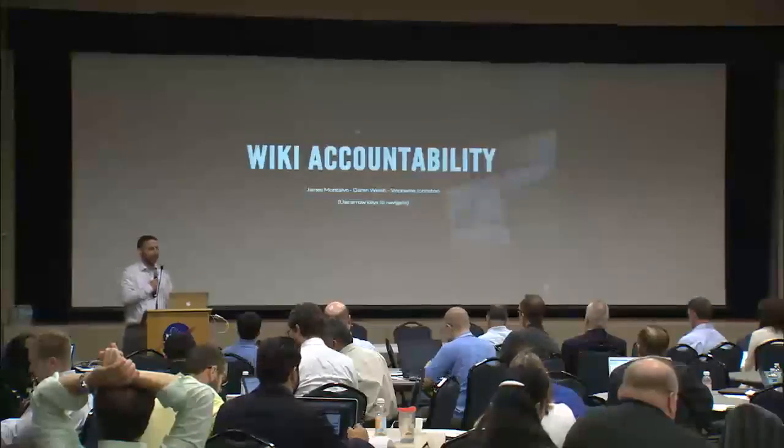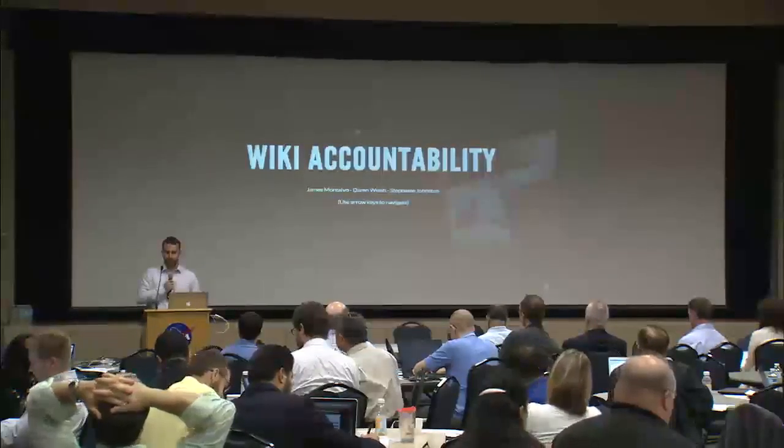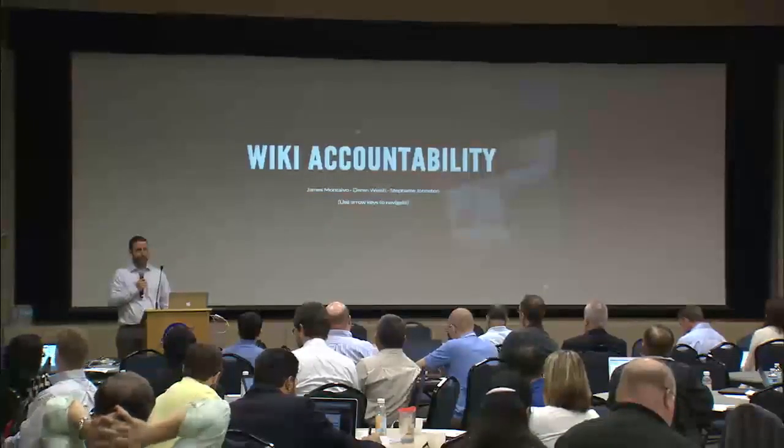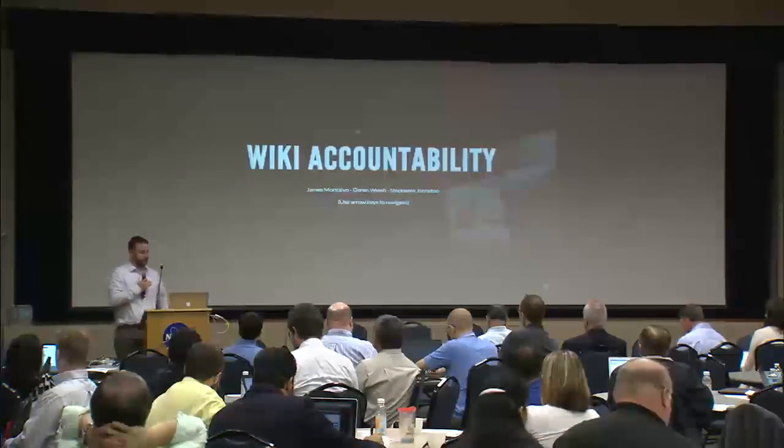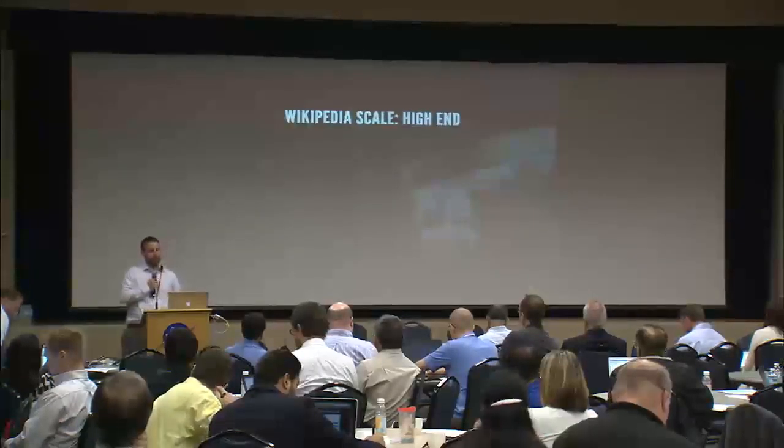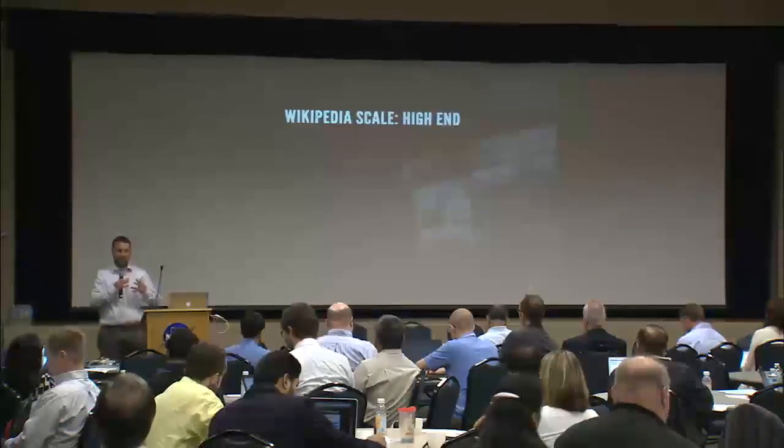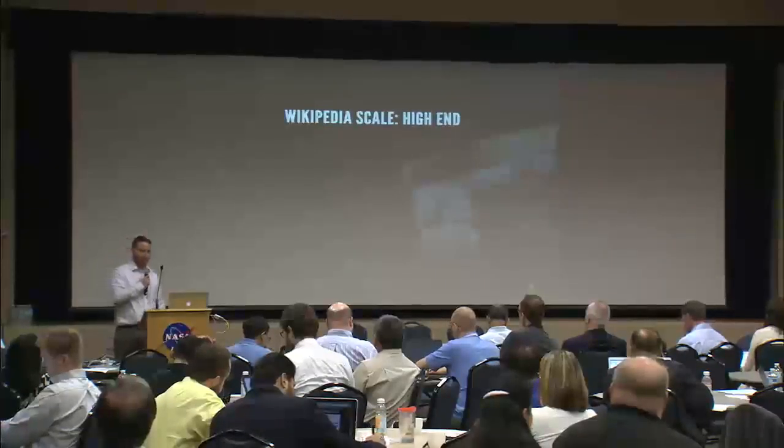What I'm going to talk about today is wiki accountability. The biggest issue we face with getting people to accept using a wiki is this notion that it's like Wikipedia. Wikipedia has errors in it — maybe one more error than Encyclopedia Britannica — but it's pretty accurate and has a lot of information. It's also in constant attack from vandalism, which we don't have.